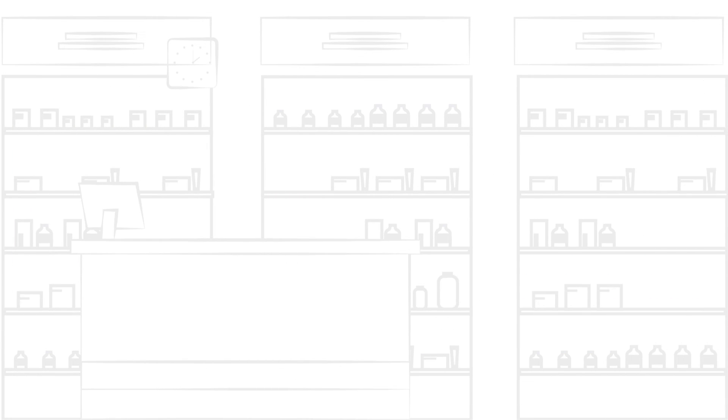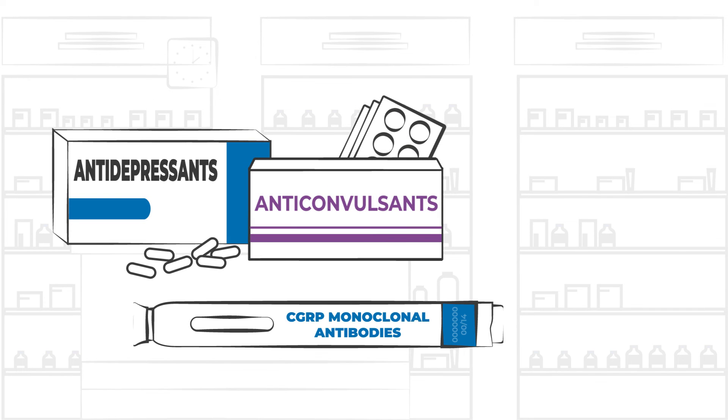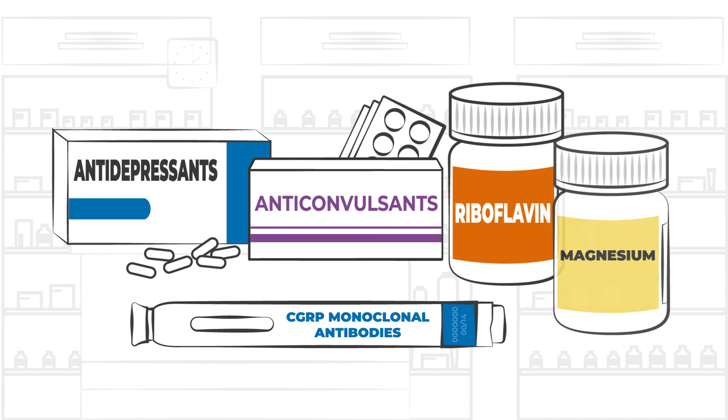Treatment can also include preventative medications such as antidepressants, anticonvulsants, CGRP monoclonal antibodies, and vitamins like riboflavin and magnesium.